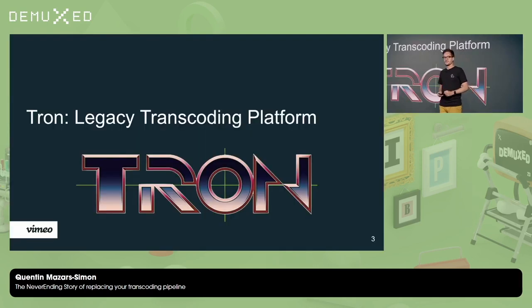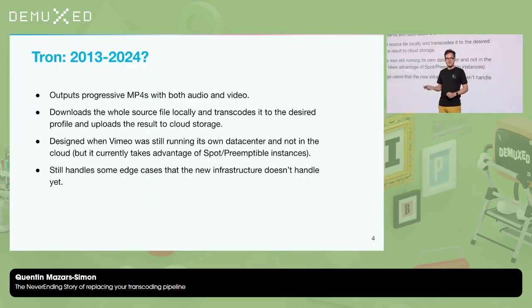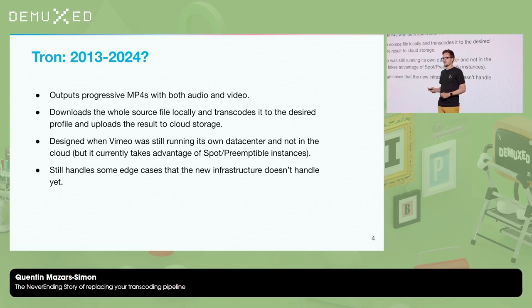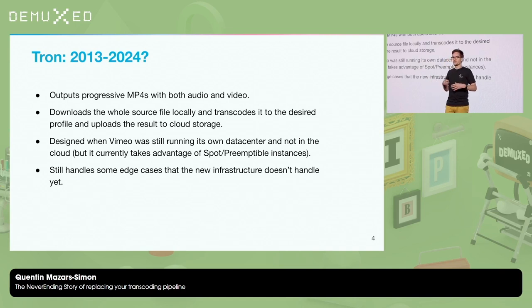First, Tron. This is our legacy transcoding platform — the one that's been there since 2013, might still be there in 2024, hopefully not. What it does is output progressive MP4, so muxed audio and video, and it's progressive.